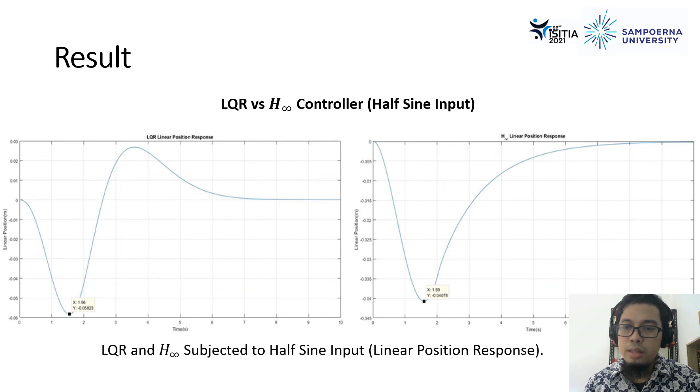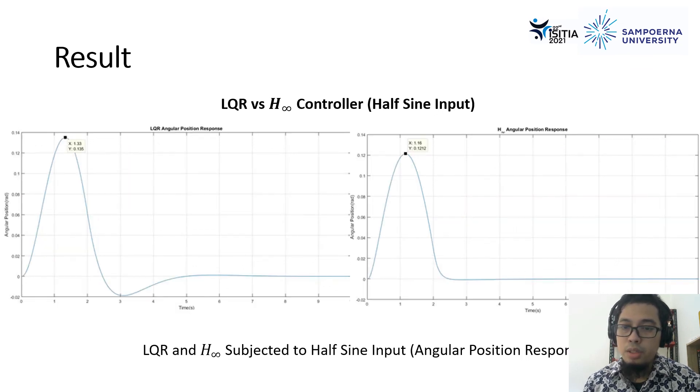For the last disturbance scenario, half-sine input, for LQR and H-infinity, we get that H-infinity still outperforms the LQR performance. For the angular position response of LQR and H-infinity, we can still obtain that H-infinity still outperforms the LQR. Where the H-infinity has around 10% less maximum tilt angle and 58% faster tilt angle rather than LQR.